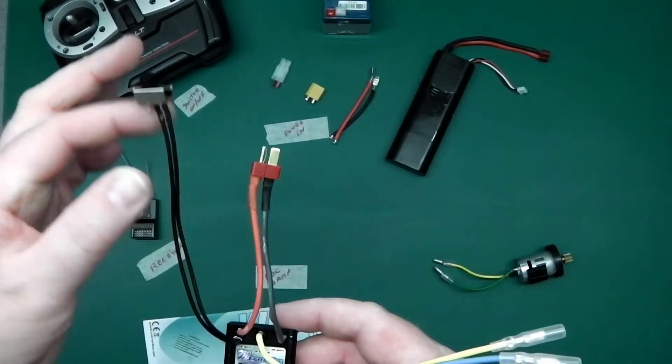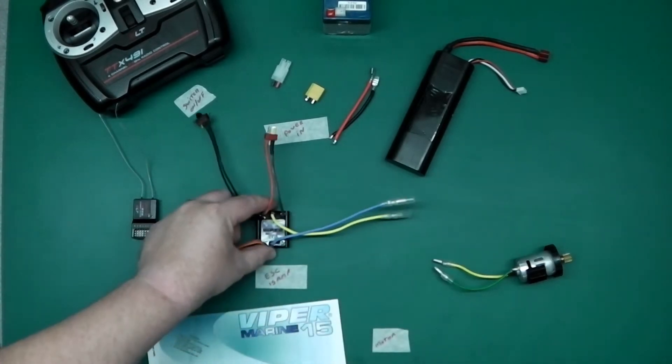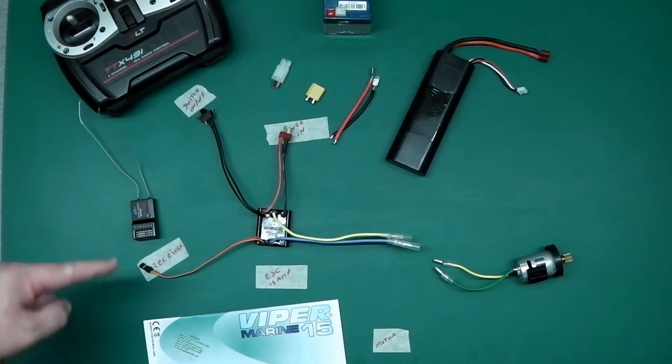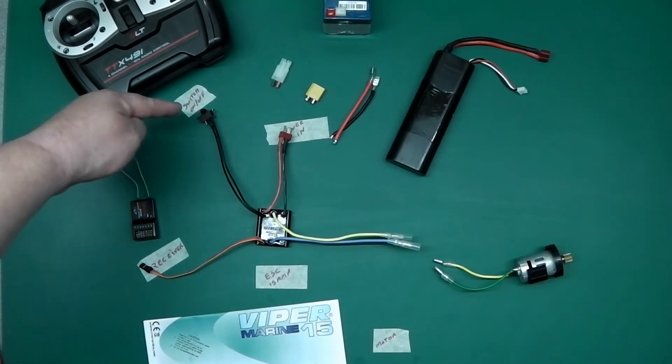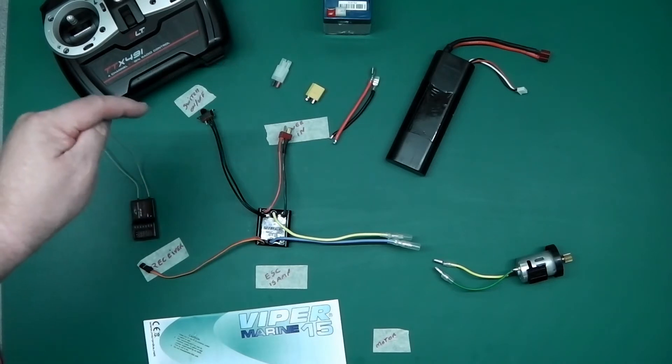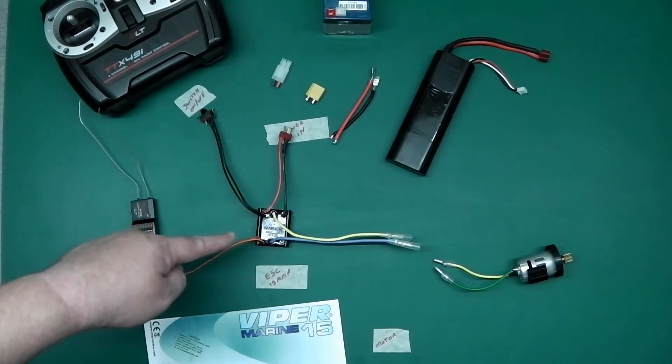And this is your switch. Okay, so if we put it down on the board, you can see very clearly now where all the connections are. Receiver, switch on off. Do not cut that switch off. Keep that switch with this ESC, do not cut it off.